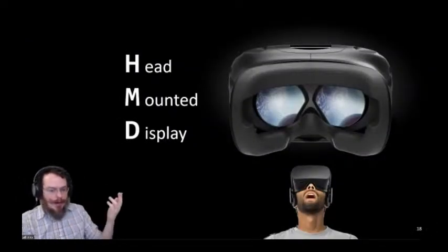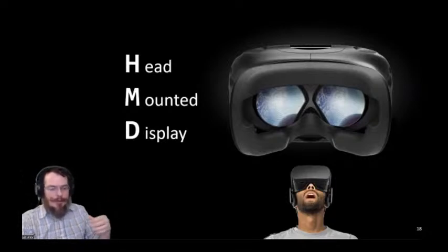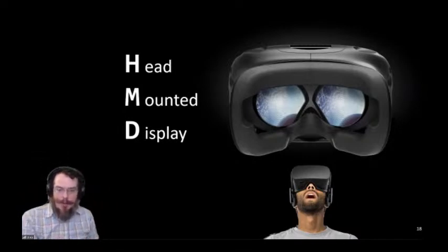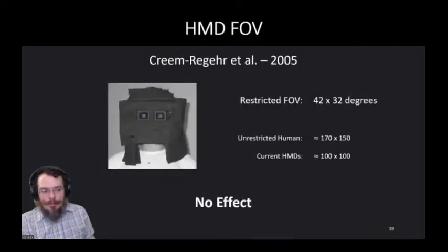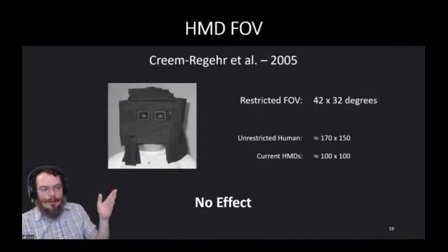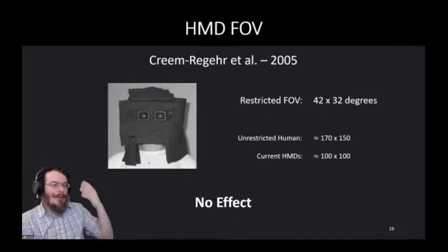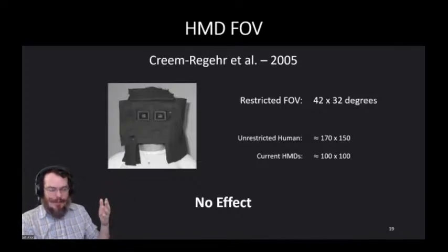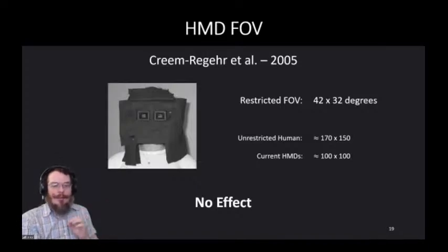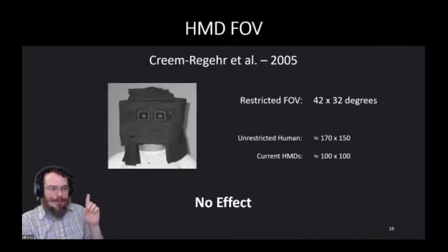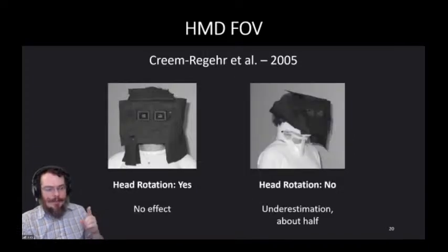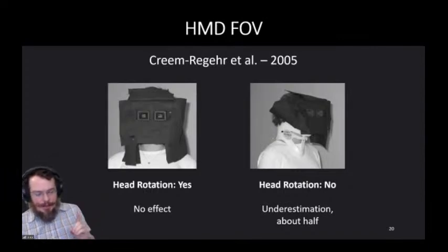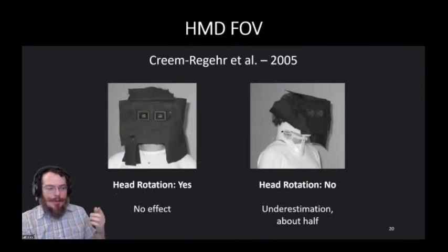A head-mounted display, a common form factor for VR. Looking through the little circular lenses, you end up with a restricted field of view, and you have this big heavy thing strapped to your face. Obviously, this is different from viewing things in the real world. So, maybe these are the cause of distance misperception. People have looked at this.